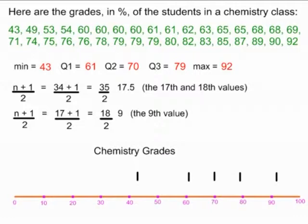Now all I have to do is connect them with my boxes and my whiskers. This is the first whisker. It connects 43 with 61. And now I'm going to build my box, connecting 61 through 70 to 79. And then I put my other whisker, which goes from 79 to 92.